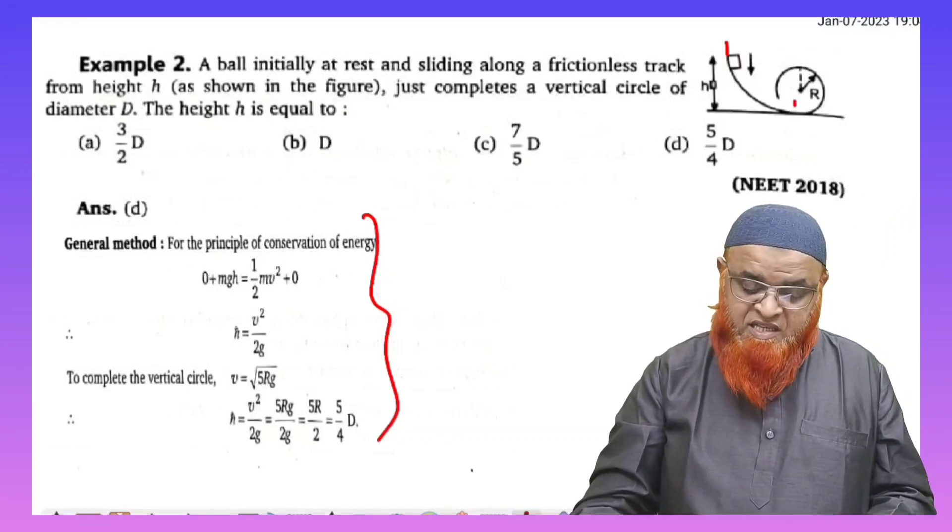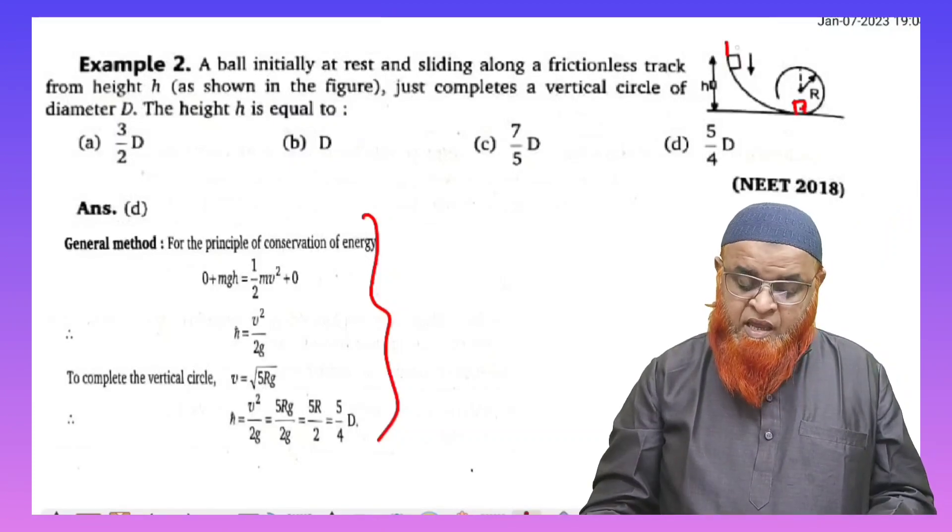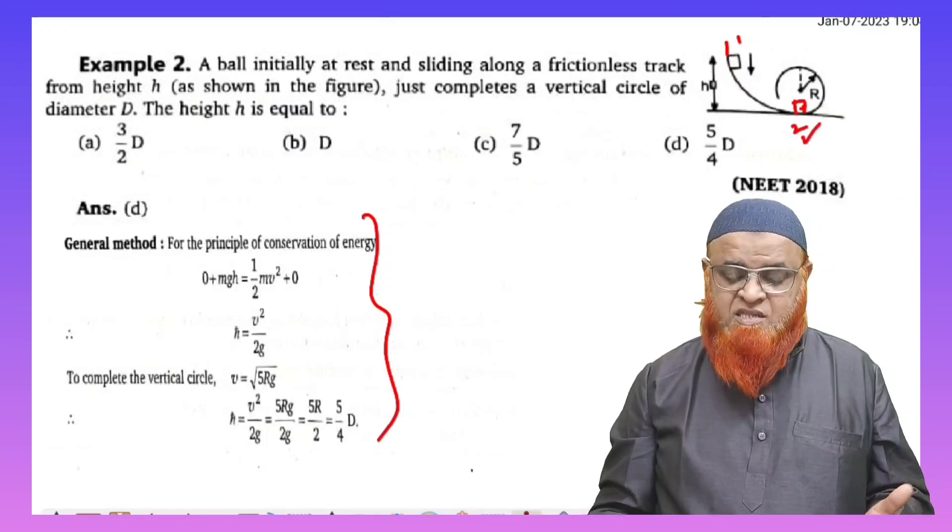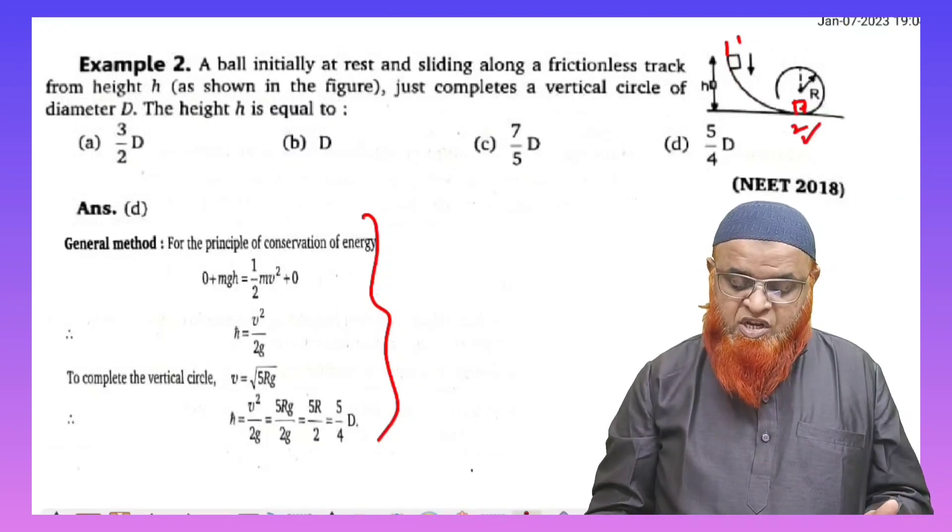So when a block is dropped from this position A, it will reach this position B at this place here. This is from A and this is the second position. Let us imagine at this second position if you observe,